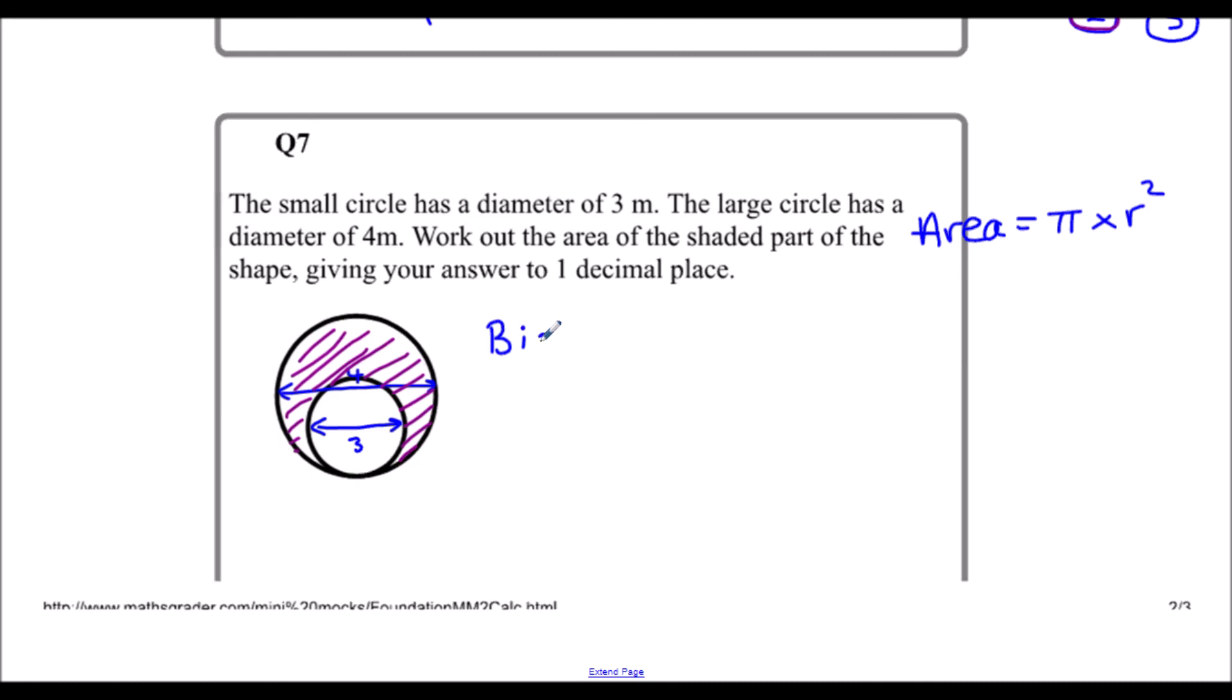So big circle, the area of the big circle is pi times the radius which is 2, half a diameter, squared. And I'm going to leave that as 4pi, so type that into the calculator it will give you 4pi. I'm going to leave it like that to start. And for the little circle, the area is pi times 1.5 squared. So again type that into the calculator.